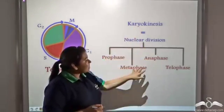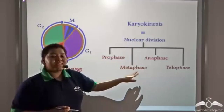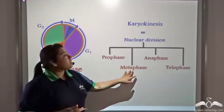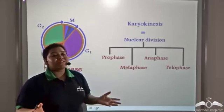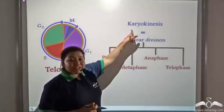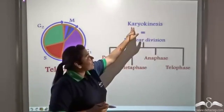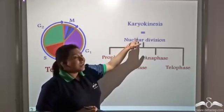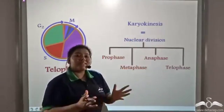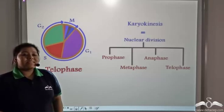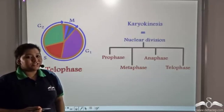All these four phases of the M phase cause the nuclear division, that is karyokinesis, where karyo means nuclear and kinesis means division. But karyokinesis is not enough for cell division. The cytoplasm needs to divide as well.